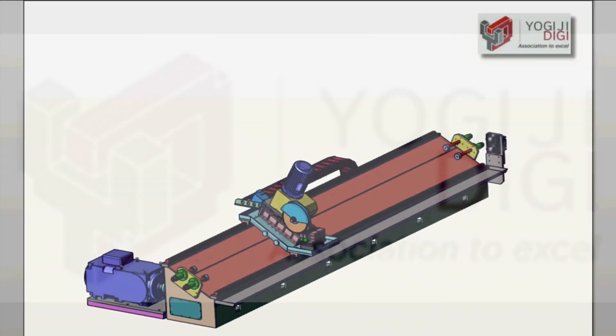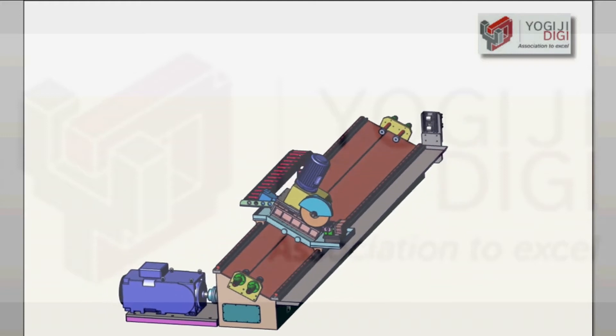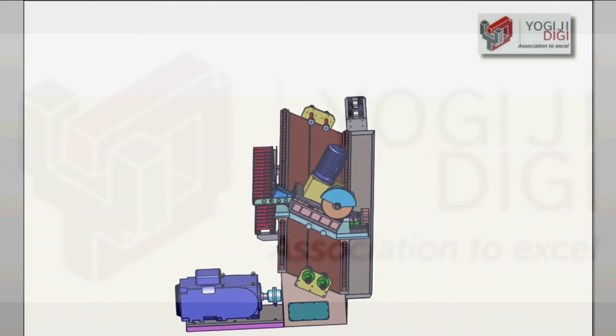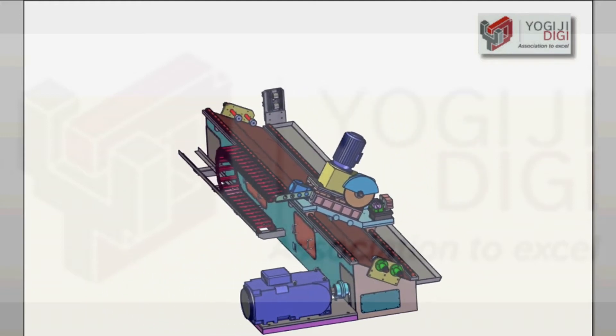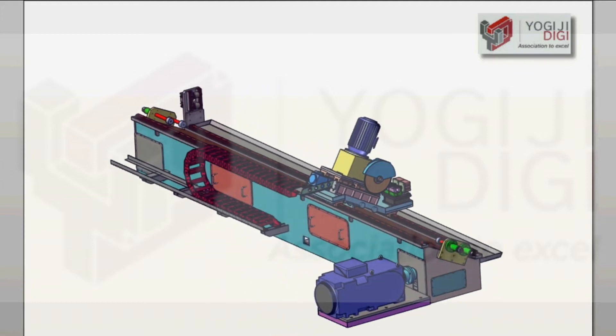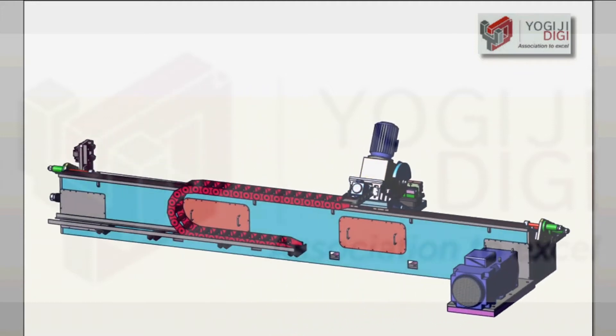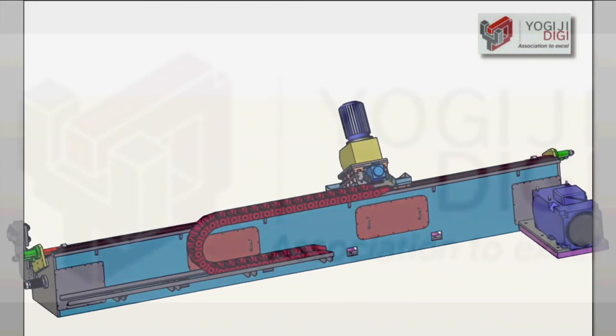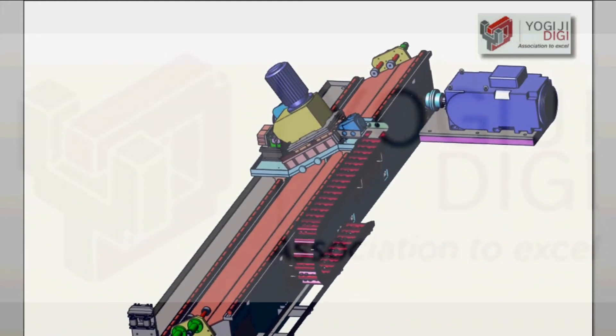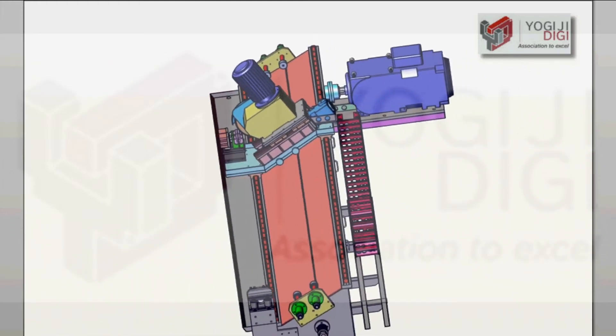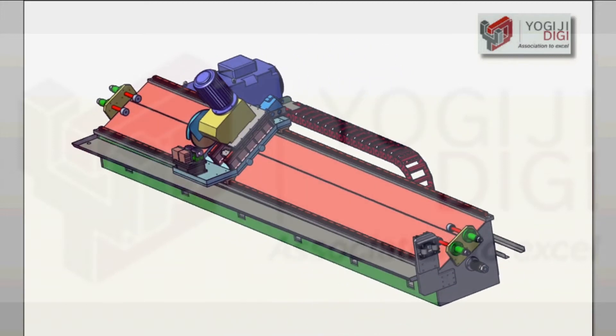This is the 120 MPM cold saw cutting car from Yogi GDG with a variable cutting speed drive. It can suit a plethora of consumer needs and market demands with respect to pipe thickness and material.